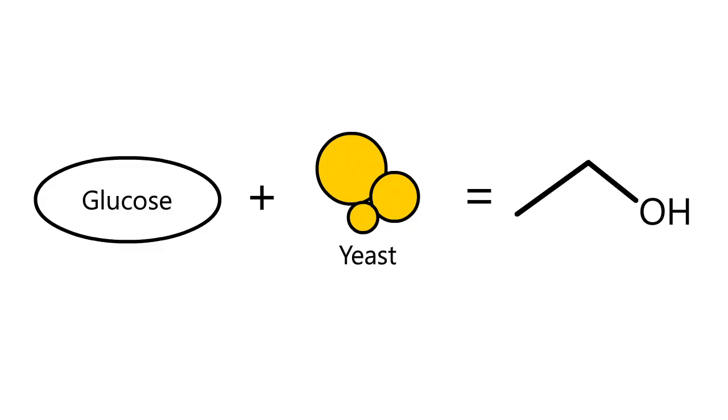So producing alcoholic beverages should be pretty easy. Take glucose, give it to yeast, and boom, drinks for everybody.